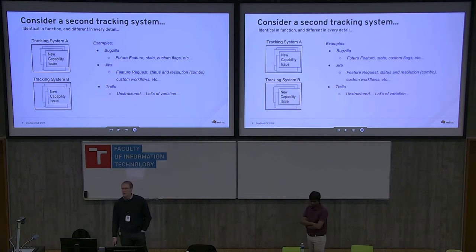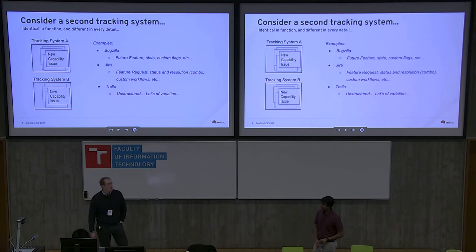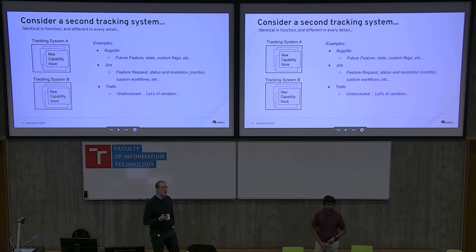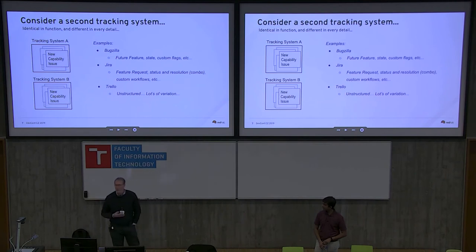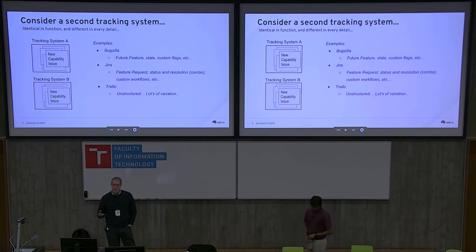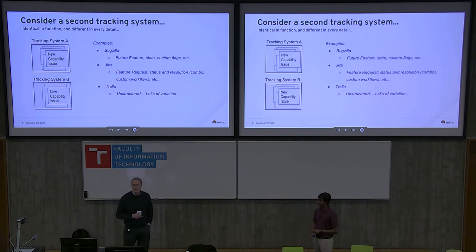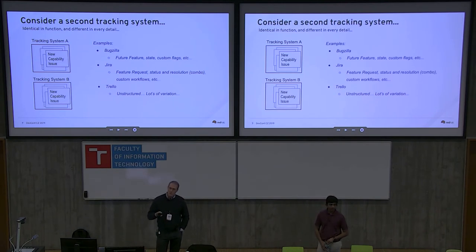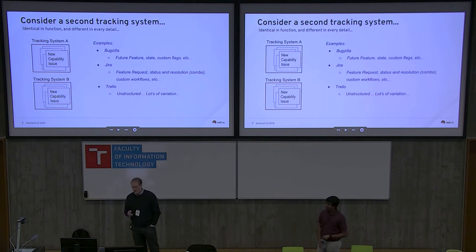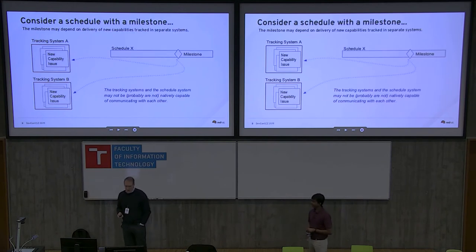Now just to complicate things, there's probably not one system — there's probably at least two. Within those systems, what they're trying to achieve is pretty much identical in function but different in every detail. For example, in Bugzilla a new capability might be represented by something called a future feature that would have a state, complemented by custom flags and other attributes. In Jira, you might have something called an issue type of feature request. It would have a combination of status and resolution roughly equivalent to the Bugzilla state, but of course different — with custom workflows and other attributes wrapped around that issue.